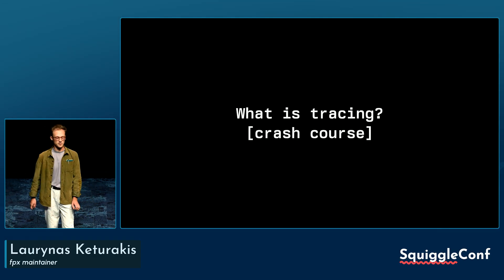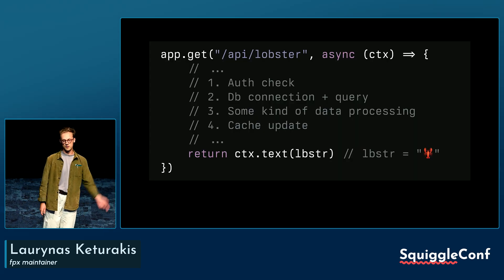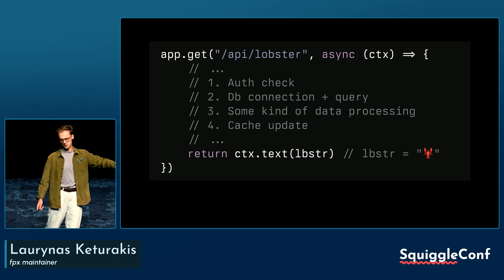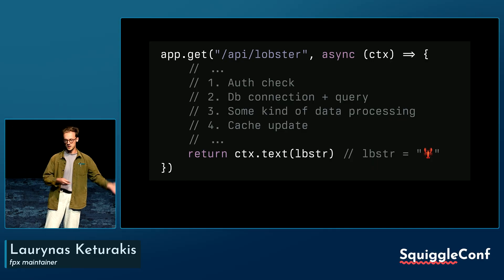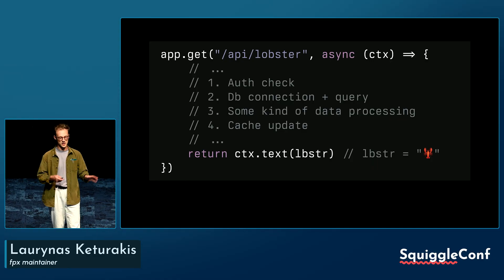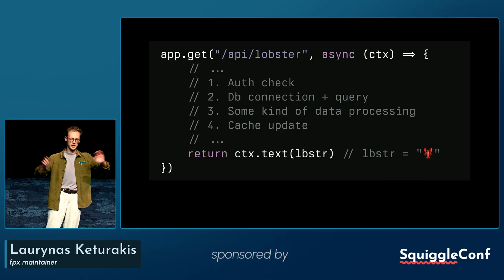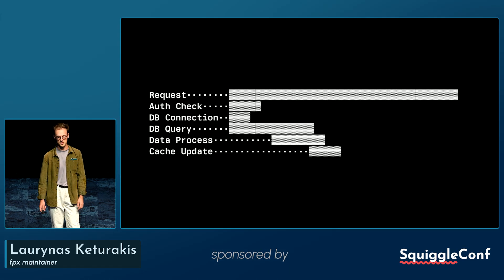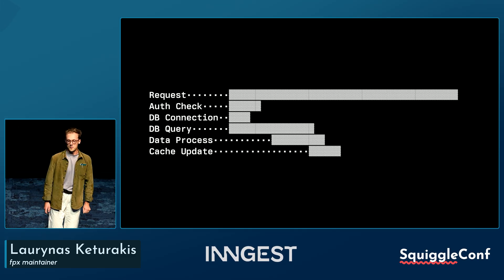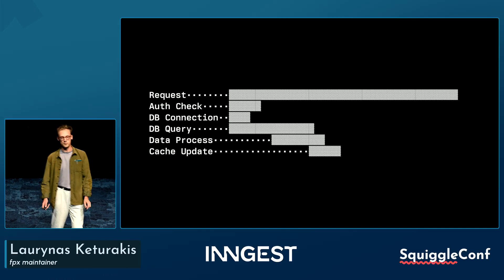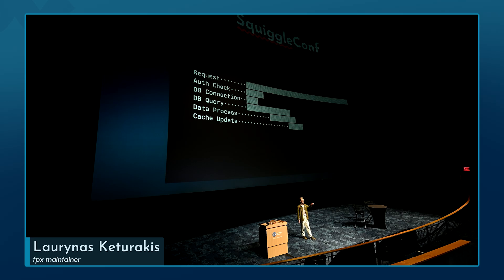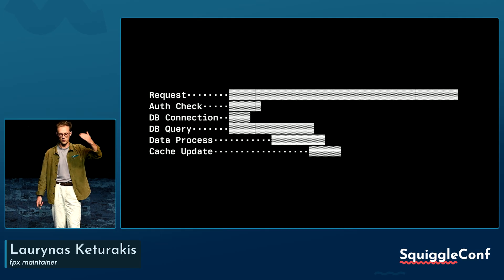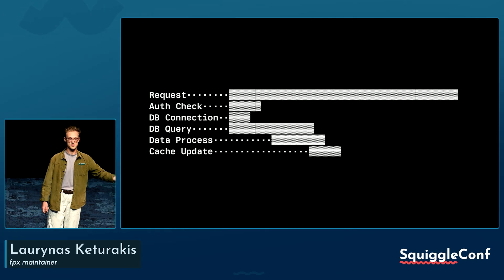What is tracing? A little crash course. Let's take our first example — we have more details on what's going on inside our handler: a little auth check, maybe a database connection query, some data processing, and we update the cache. That's the layout of a typical handler. So how do we get a nice waterfall visualization? Most of the time you'll end up using tracing. Tracing is essentially a small piece of data — an object that you pass along in each part of the request.